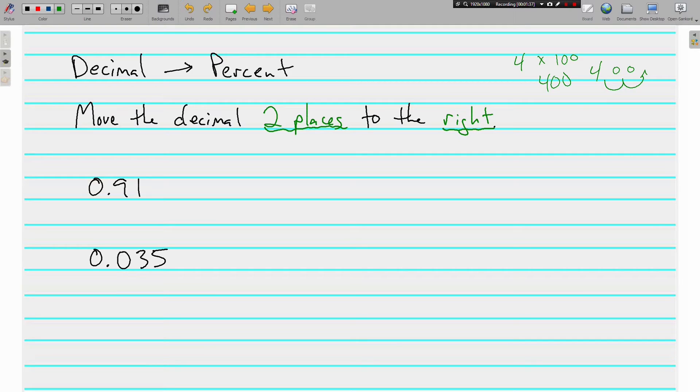When we have 0.91 or 91 hundredths, and we want to make it a percent, we're multiplying by 100, and that gives us 91%. We move the decimal over to the right.